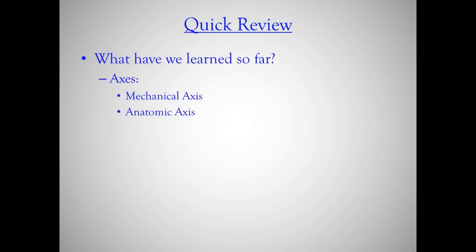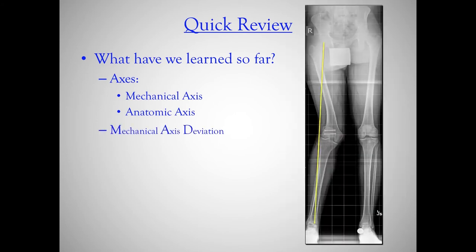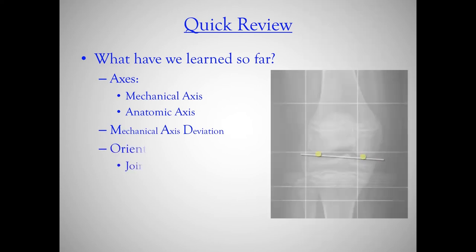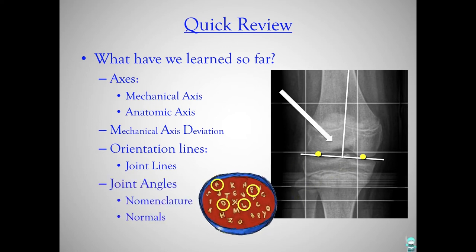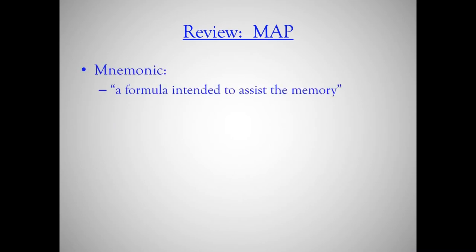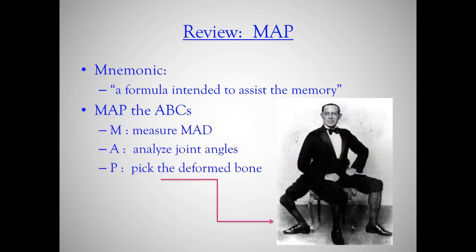Let's quickly review what we've learned so far. We've learned about axes — both mechanical and anatomic — mechanical axis deviation, identification of deformities, joint orientation lines, and joint orientation angles. Let's review our mnemonic MAP: M stands for measure the MAD, A is analyze the joint angles, and P is pick the deformed bone, which is sometimes more obvious than others.